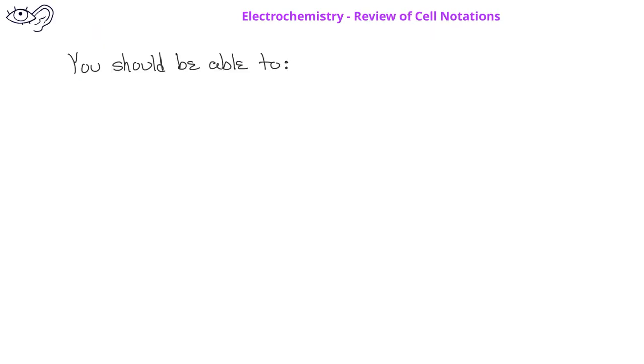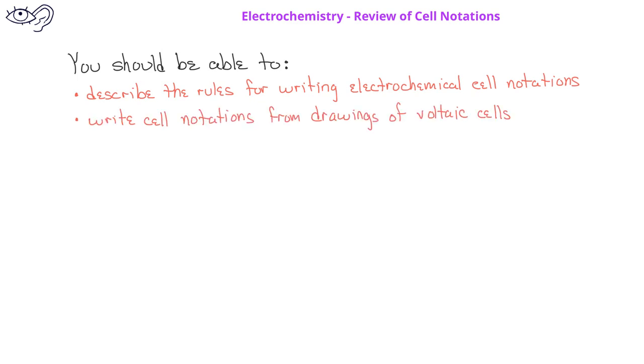By now, you should be able to describe the rules for writing electrochemical cell notations. You should be able to write cell notations from drawings of voltaic cells, and you should also be able to write cell notations from equations of redox reactions.